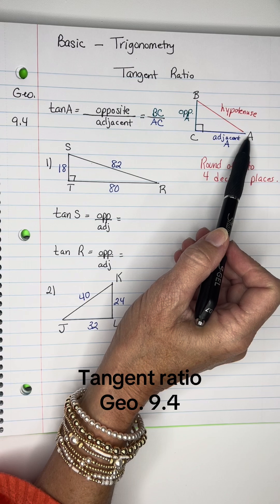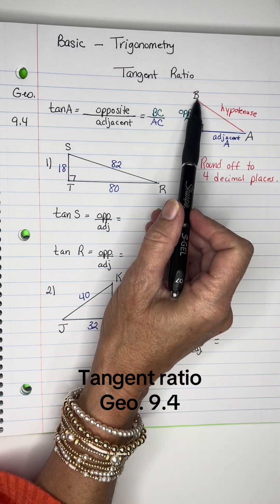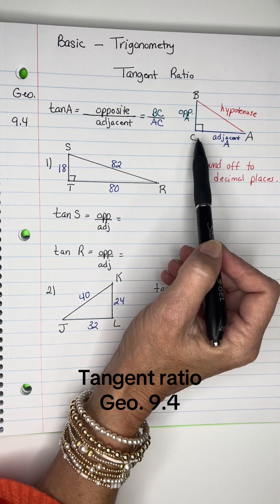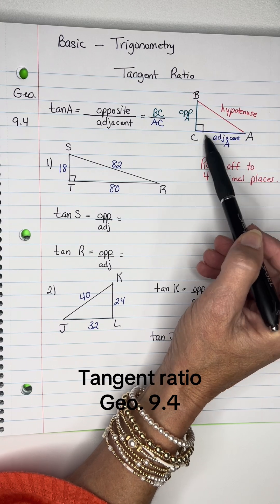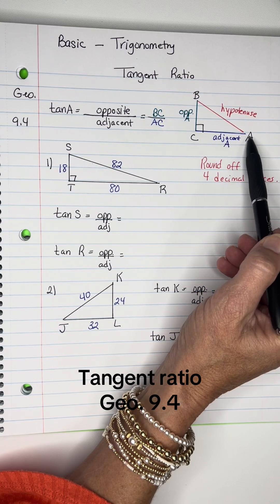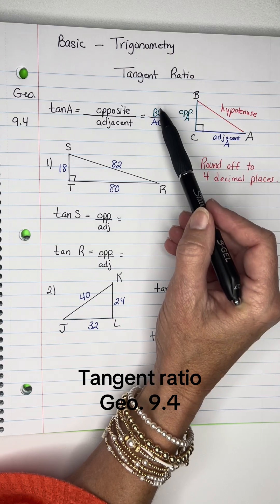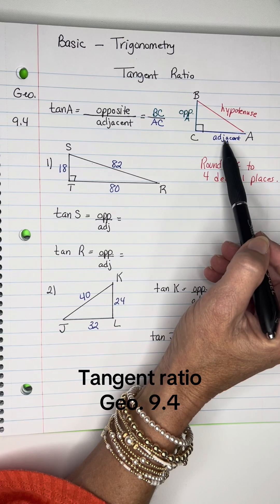In this diagram, A is opposite to BC—that's the opposite side. The adjacent side is the segment that forms angle A. So tangent equals opposite over adjacent, this one over this one.